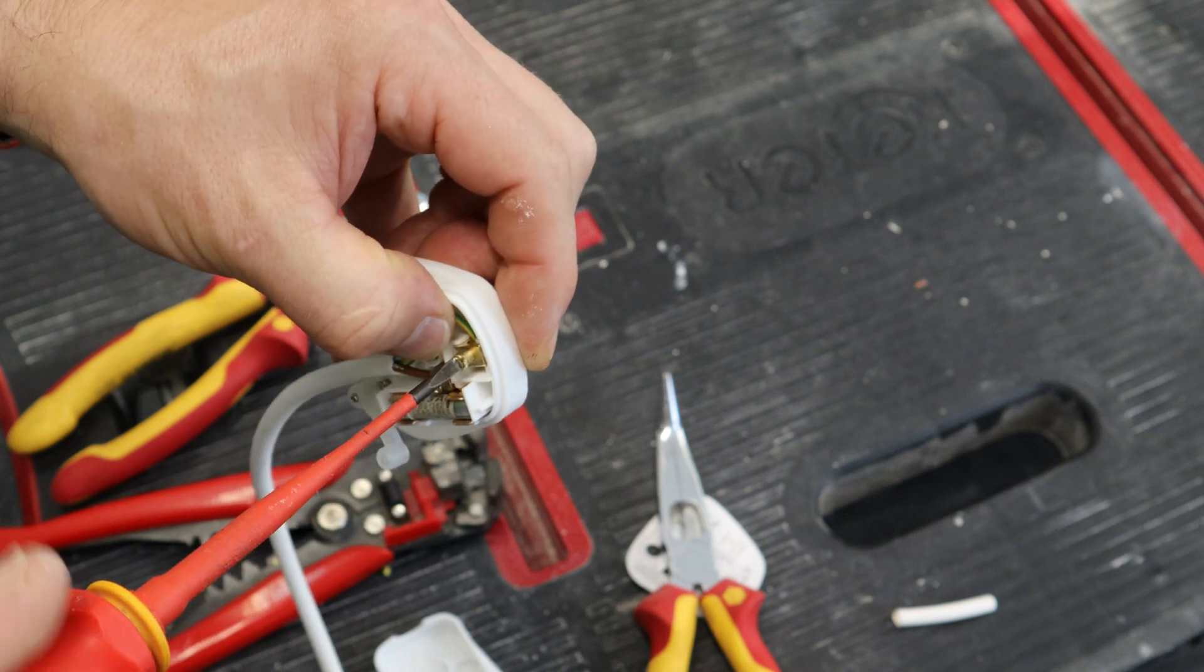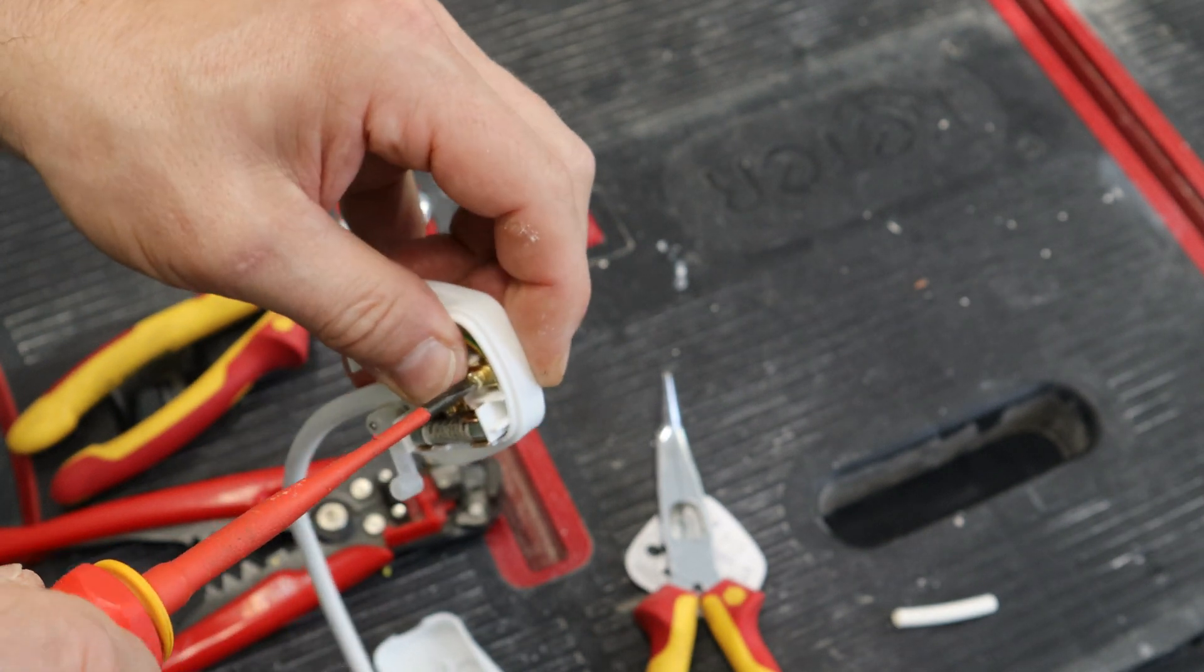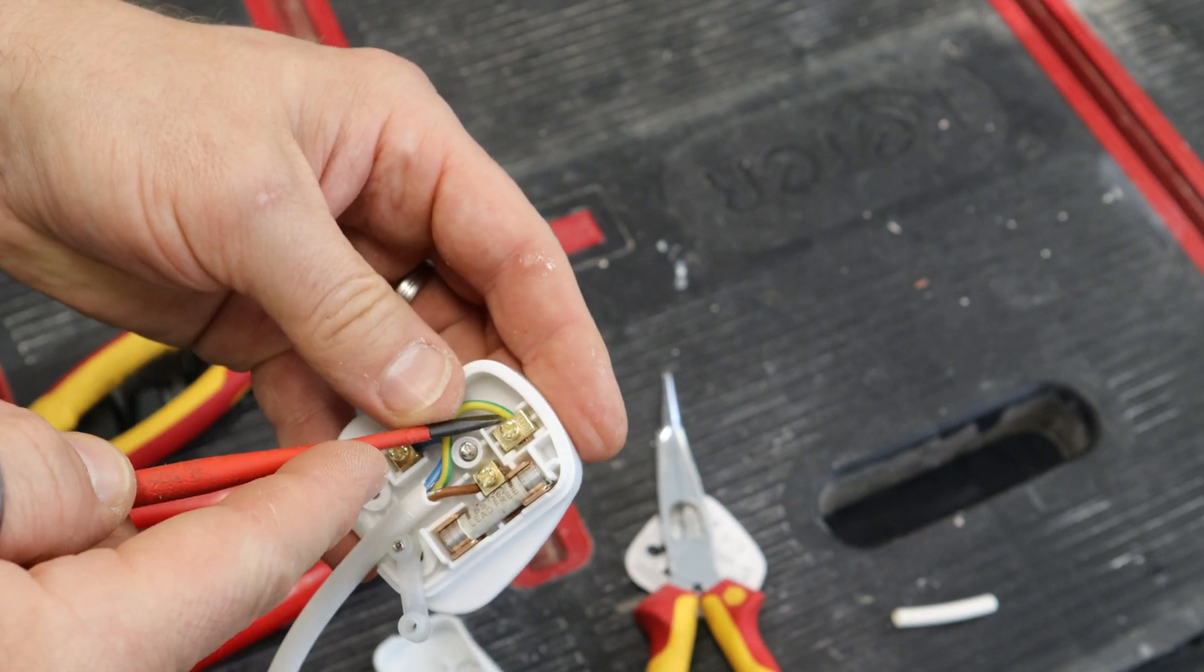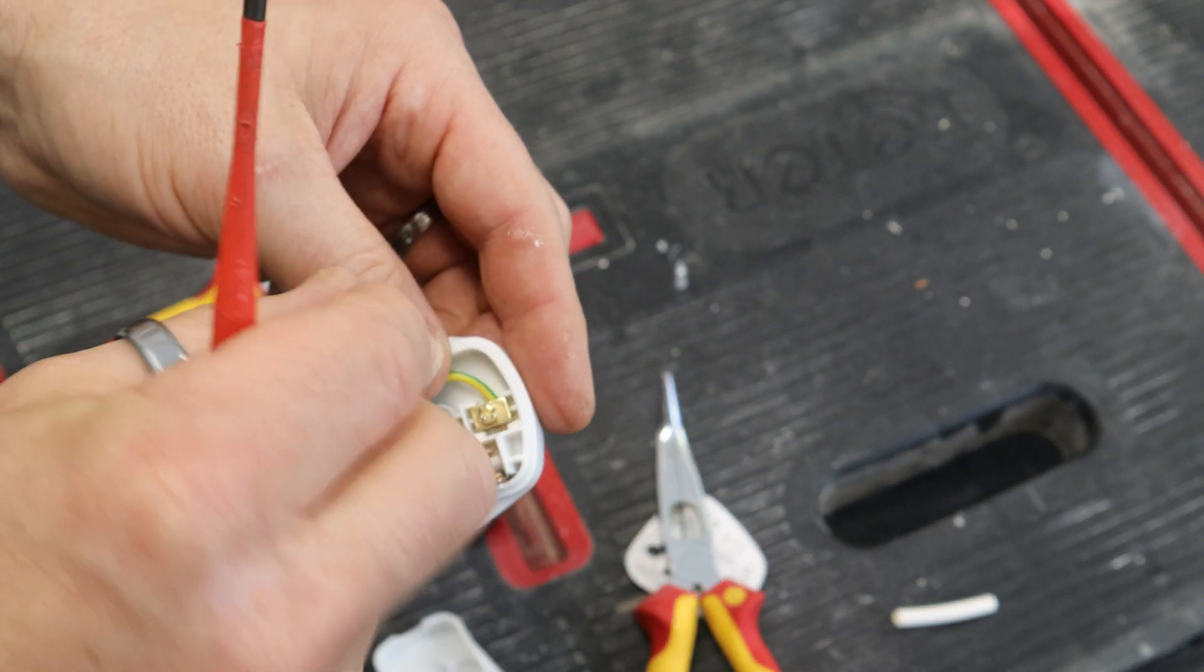Now the best thing about ferrules, if you have been able to use them, is that you don't get any thread cable. So you just need to check that nothing's come out when you've done it. If not, you need to undo it, re-twist it, put it back in again.